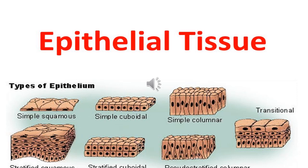We will be discussing each type of epithelium in detail later on. We have discussed what is tissue, the different types of tissue in our body, then we focused on epithelial tissue called epithelium. We studied the definition of epithelium, the different classifications, the types of cells, special types of cells, the characteristics of epithelium, and its functions.